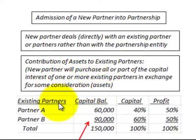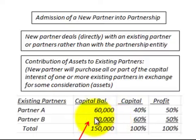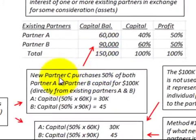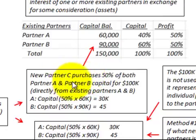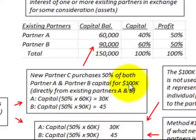We have our existing partnership with Partner A and Partner B. Partner A has a capital balance of $60,000 and Partner B has a capital balance of $90,000, so they have a total capital balance of $150,000. New Partner C is going to purchase 50% of both Partner A and Partner B's capital for $100,000. So Partner C is going to pay $100,000 for this capital from Partners A and B.